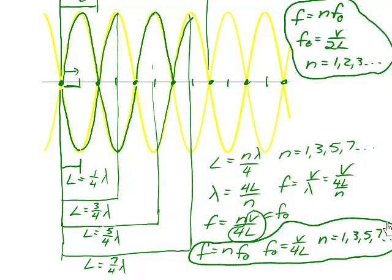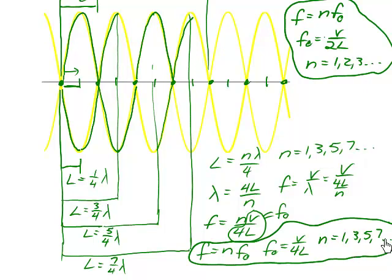Here's our final result for a tube that is open at one end and closed at the other. The fundamental frequency is half of the fundamental frequency for the tube that is closed at both ends, so it has a lower fundamental frequency. However, the harmonics are the odd multiples of this fundamental, instead of every integer multiple of the fundamental as in the case of the tube closed at both ends.